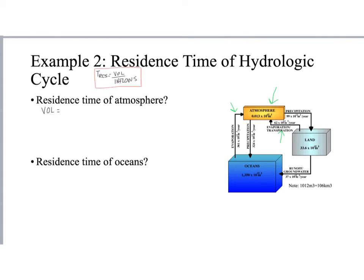So for both of these examples, I'm going to use my same equation that popped up here, that residence time is going to be the volume divided by the inflows. So when we're talking about the atmosphere, my volume is going to be that 0.013 times 10 to the 15th cubic meters. And my inflows is going to be equal to the evaporation from the ocean to the atmosphere, plus the evaporation from land to the atmosphere. And this is going to be a total of 423 times 10 to the 12th cubic meters per year.